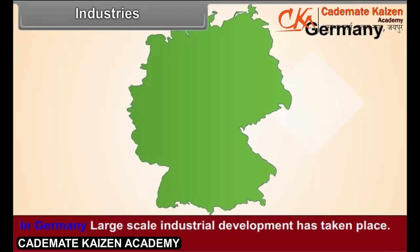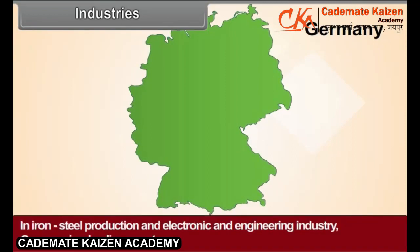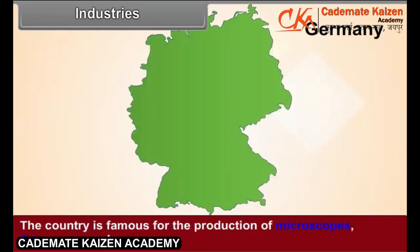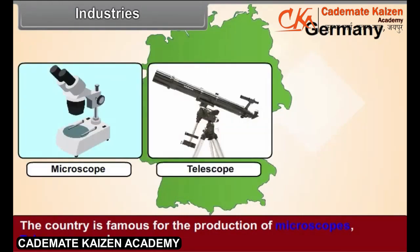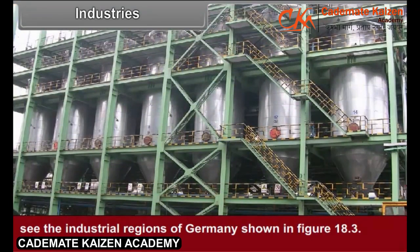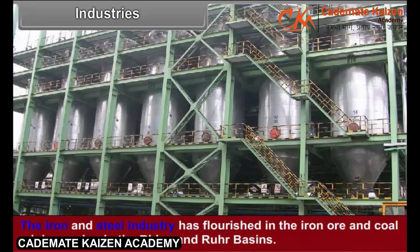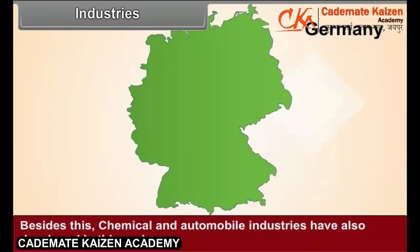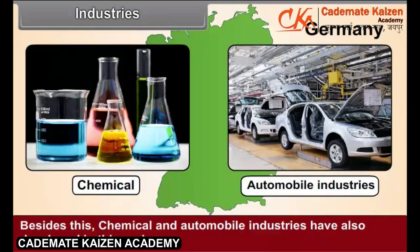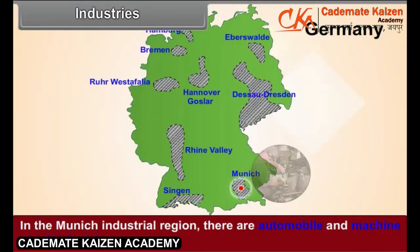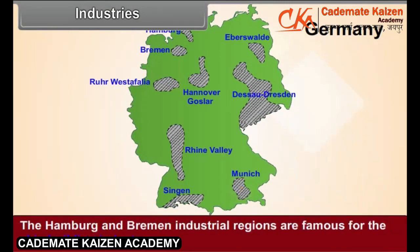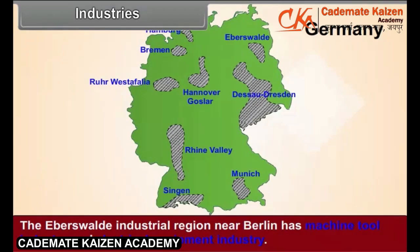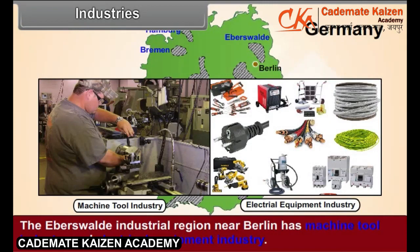Industries. In Germany, large-scale industrial development has taken place. In iron and steel production and electronic and engineering industry, Germany is a leading country. The country is famous for the production of microscopes, telescopes, and cameras. The iron and steel industry has flourished in the iron ore and coal mining region in the Rhine and Ruhr basins. Chemical and automobile industries have also developed in this region. In the Munich industrial region, there are automobile and machine tool industries. The Hamburg and Bremen industrial regions are famous for the shipbuilding industry. The Eberswalde industrial region near Berlin has machine tool industry and electrical equipment industry.